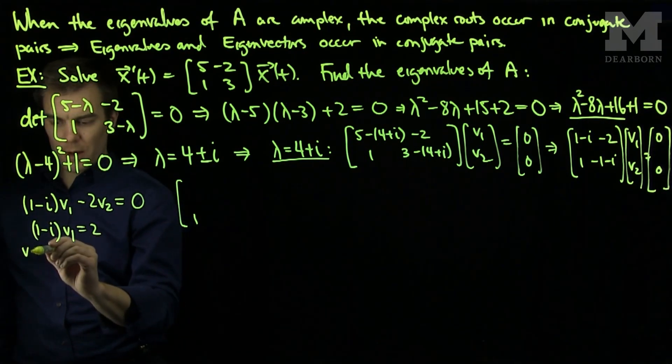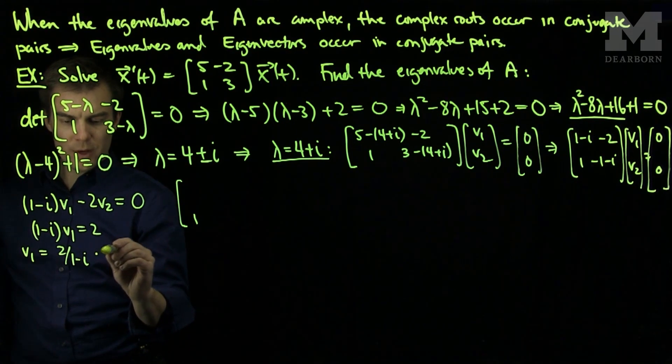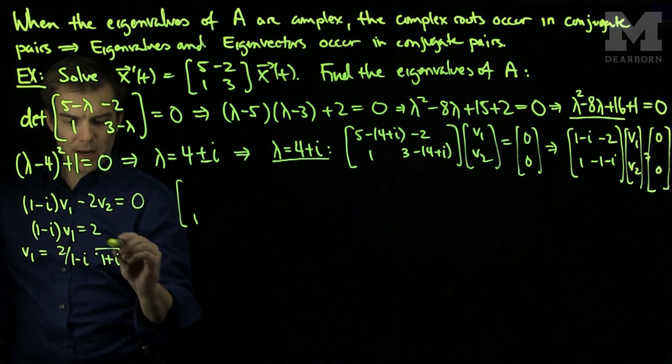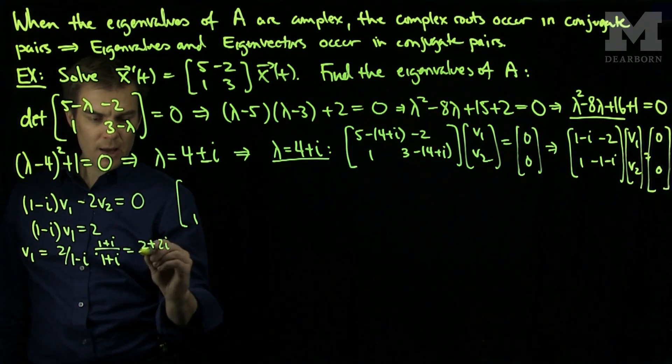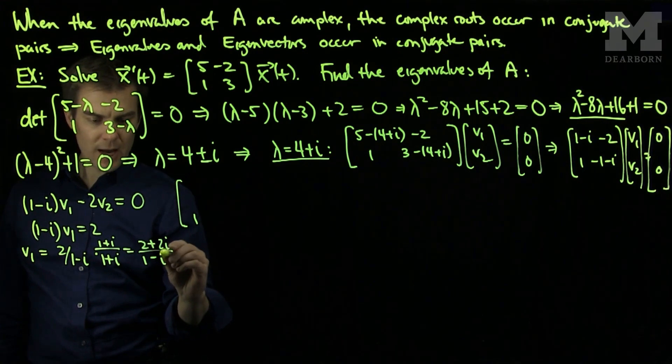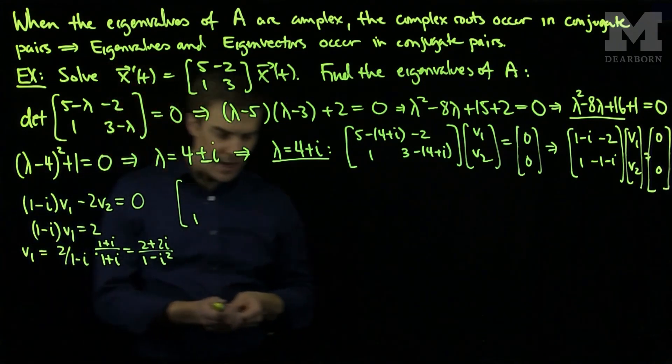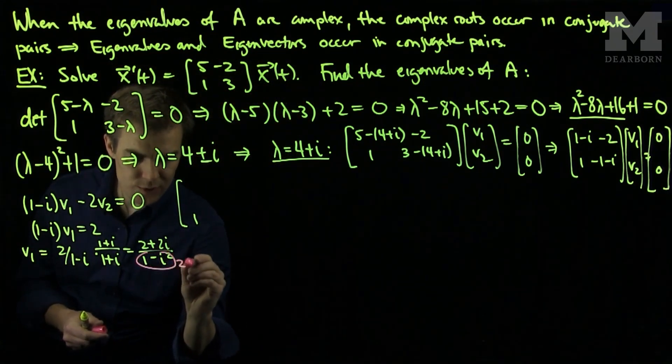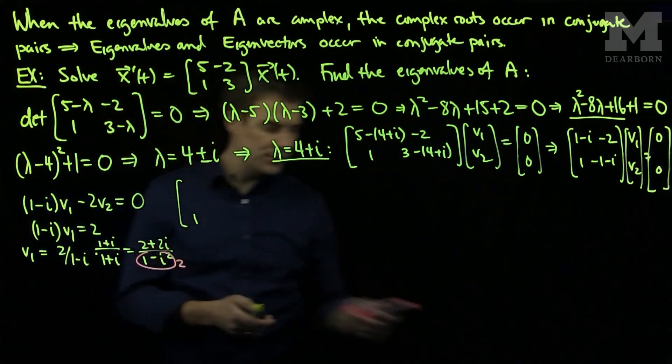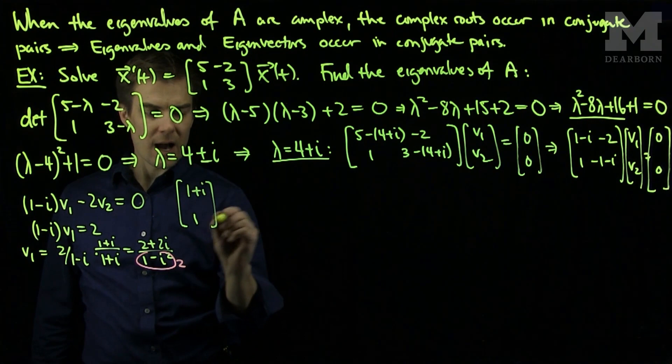So v₁ will be 2/(1-i), which we can simplify by multiplying top and bottom by 1+i, giving (2+2i)/(1-i²). We see v₁ = (2+2i)/2, and the 2's cancel, so v₁ = 1+i.